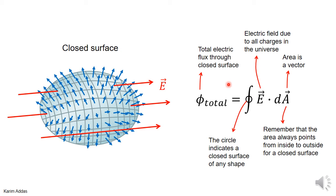Also notice that when you write down the integration of E dot dA with the circle, it contains so much information. Let's summarize: first, the circle means you're integrating over a closed surface of any shape. Second, area is a vector, and the area vectors are defined to point from inside to outside.